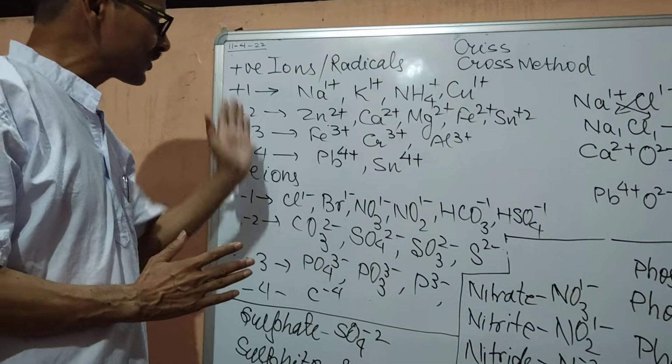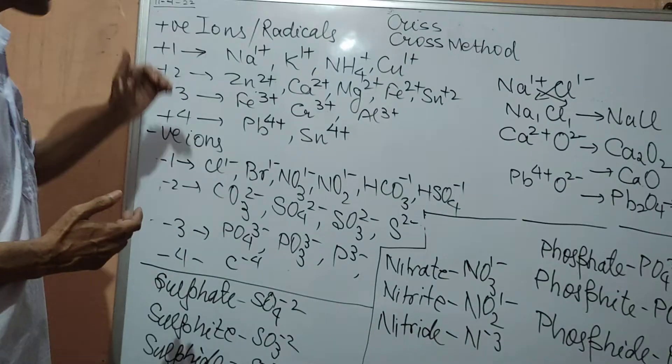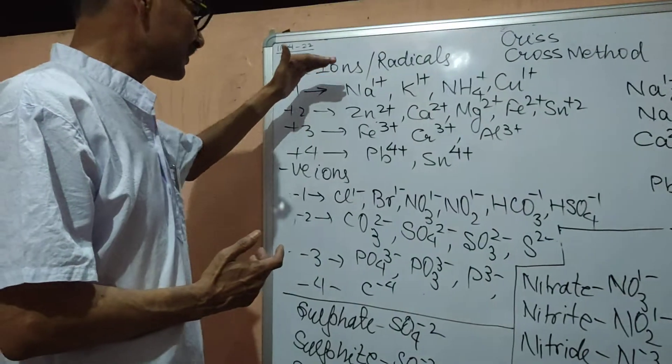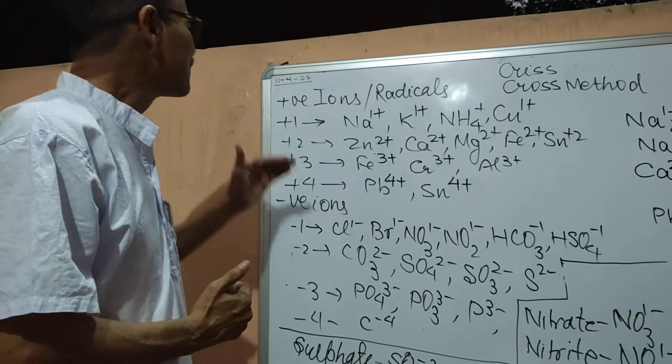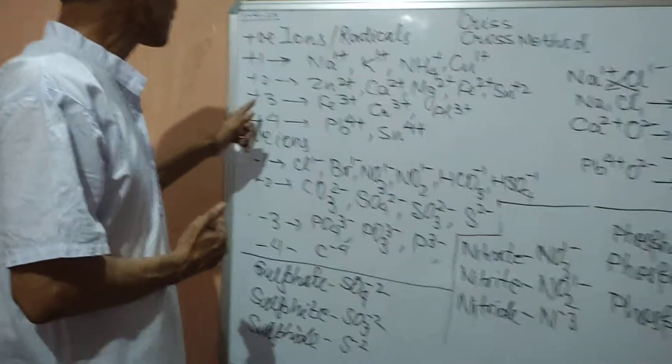Always to learn the valency chart, prepare the valency chart. And it should be in this method. Positive ions, then write all the positive ions you know with the valency of plus 1, plus 2, plus 3, plus 4.